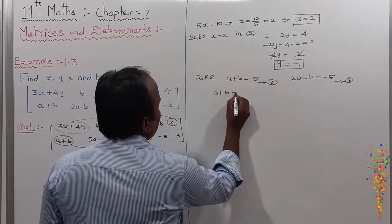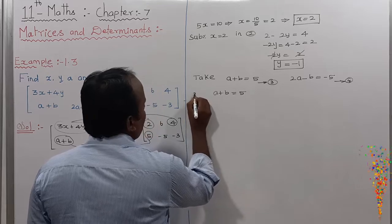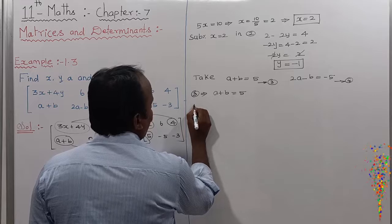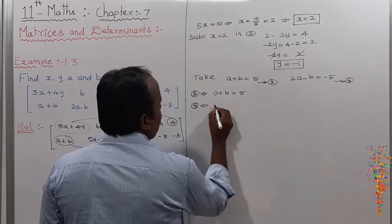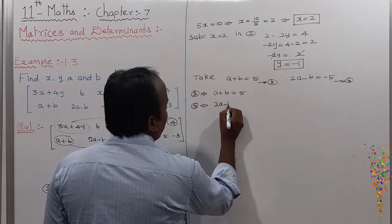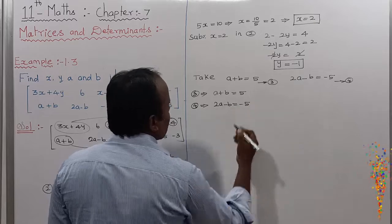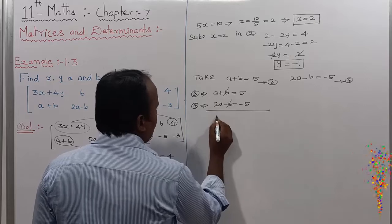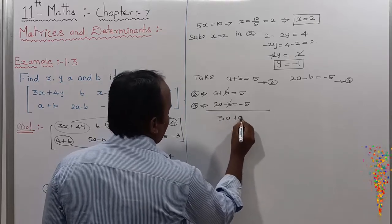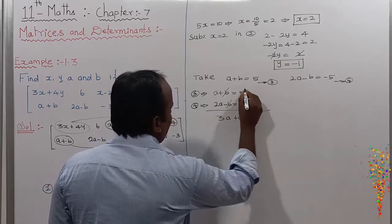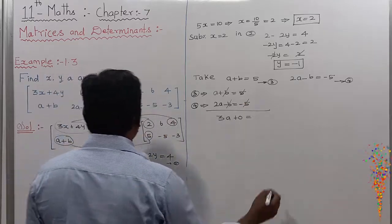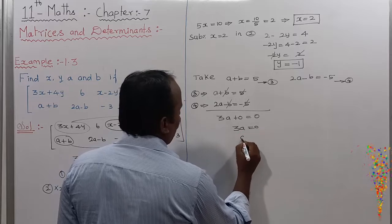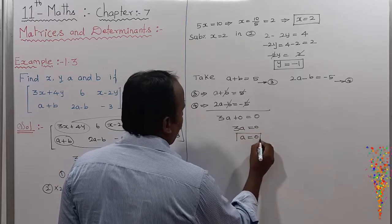Directly adding equation 3 and equation 4: A plus B equals 5, and 2A minus B equals minus 5. The B terms cancel, giving 3A plus 0 equals minus 5 plus 5, which equals 0. So 3A equals 0, therefore A equals 0.